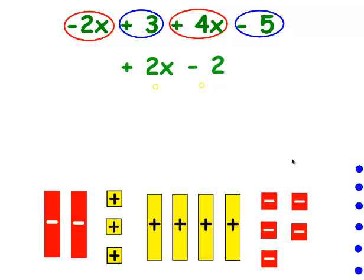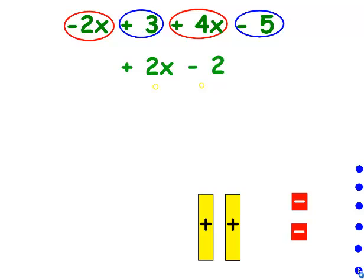Let's look and see what happens on our algebra tiles. I'm going to get rid of zero pairs with my variables first. They go, they go. There are no more zero pairs of the variables, but there are with the numbers. That positive cancels out that negative, same there, same there. And I'm left with two positive X's and two negatives — two X minus two.